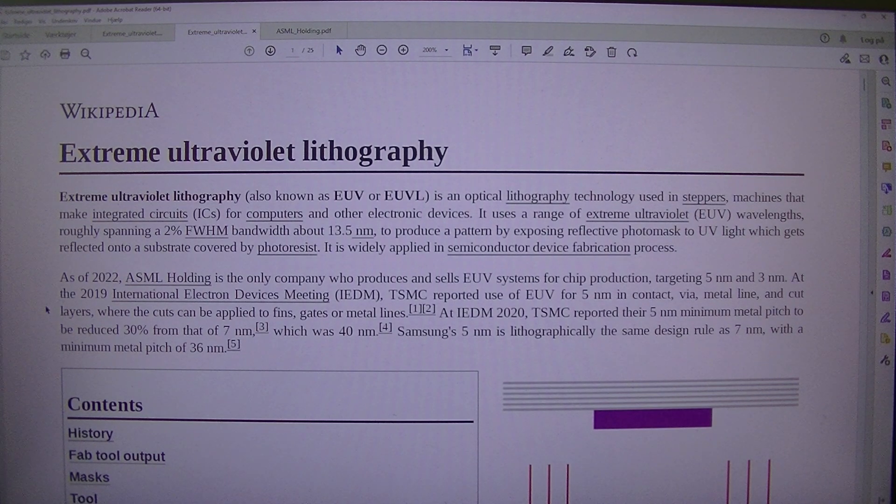At IEDM 2020, TSMC reported their 5nm minimum metal pitch to be reduced 30% from that of 7nm, which was 40nm. Samsung's 5nm is lithographically the same design rule as 7nm with a minimum metal pitch of 36nm.